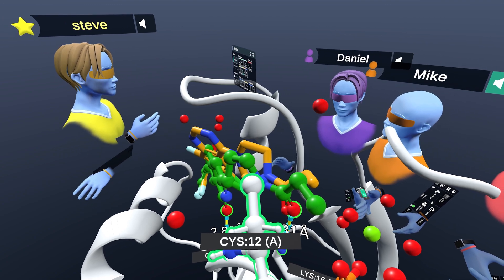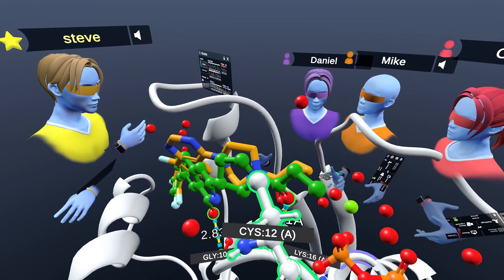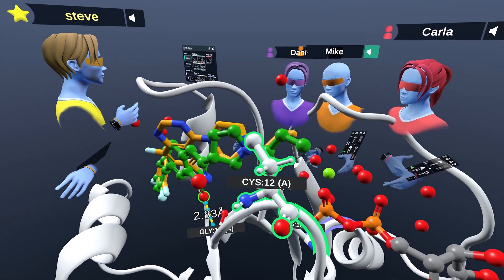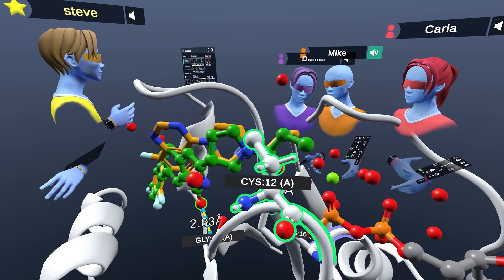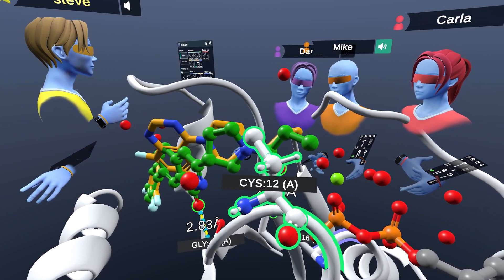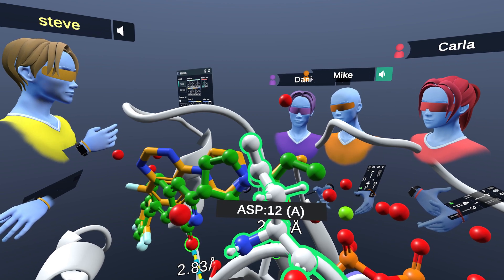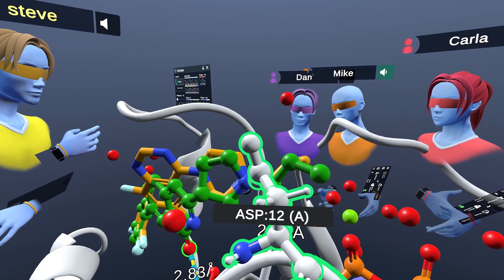And there's another pretty common mutant that's the G12D that people would like to target. But if you put in aspartic acid there, we can see that we're not able to form the same covalent bond with the acrylamide. So we need a different strategy if we wanted to go after G12D.